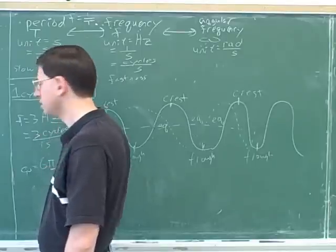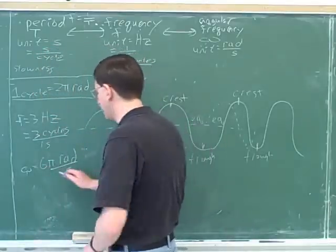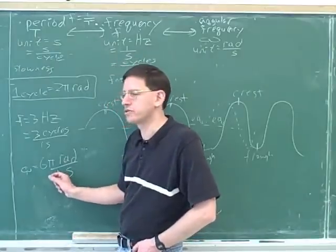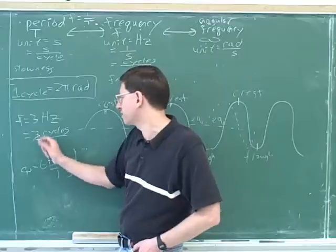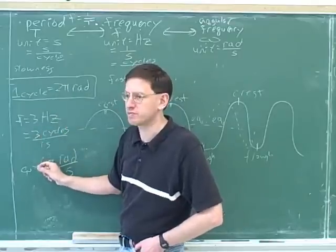It takes one second for three cycles. So, how many radians can we go through in a second? Well, six pi. Three cycles is three times two pi, which is six pi.